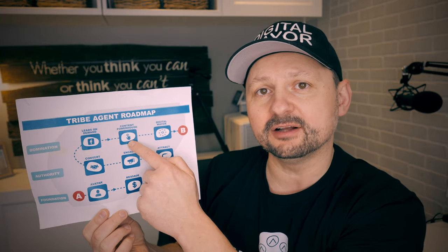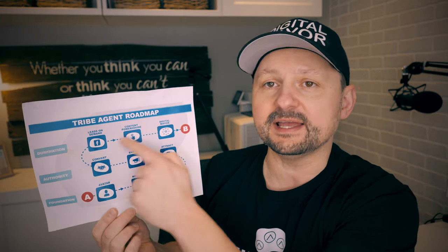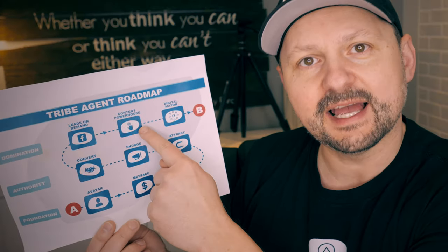Your content will build your know, like, and trust factor in your community. Let's look at our handy-dandy agent tribe roadmap. When it comes to content, I call this the content powerhouse, and it's in the third phase called domination. If you want to see previous videos about phase one — foundation — and phase two — authority — I'll put the link in the corner or in the description below. Three different content types you should consider: cornerstone content, connection content, and everyone's favorite, conversion content.